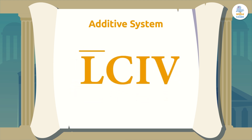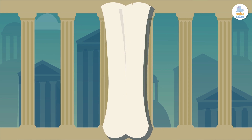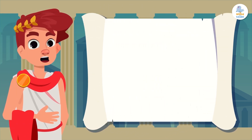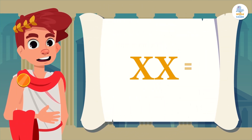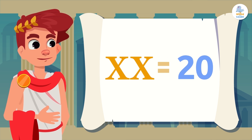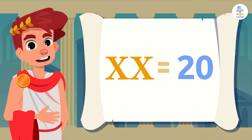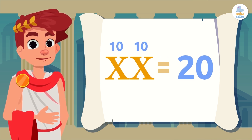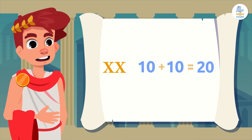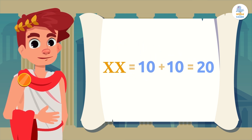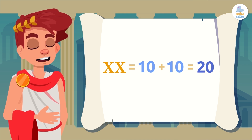But then the system changed a little to also include subtraction and multiplication. Let's look at some examples. In the Roman numbering system, two letter X's represent the number 20, since the letter X has a value of 10. If we add two X's together, it is like adding 10 plus 10 — this is how we get the number 20.